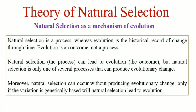In this video we will talk about the theory of natural selection, with reference to natural selection as a mechanism of evolution. Natural selection is basically a process or mechanism that results in the change in allelic frequency of populations, resulting in evolutionary change. We can say that natural selection is a process, whereas evolution is the outcome or the change that we observe in populations.